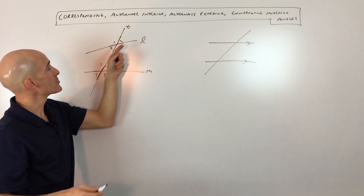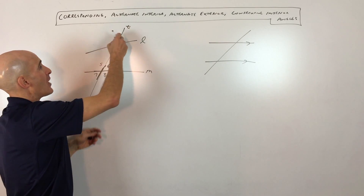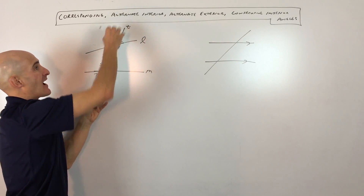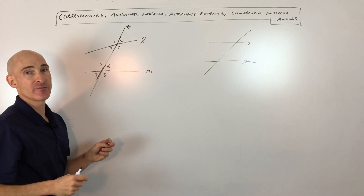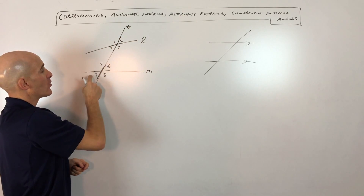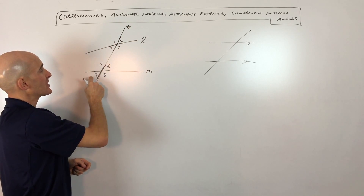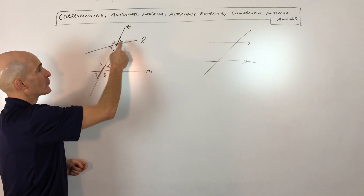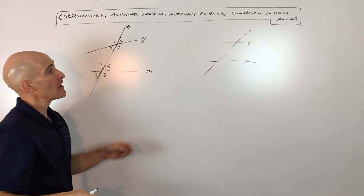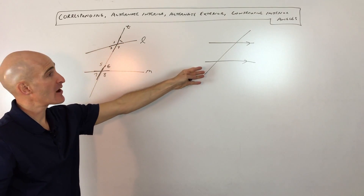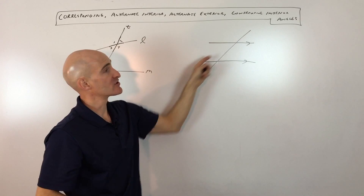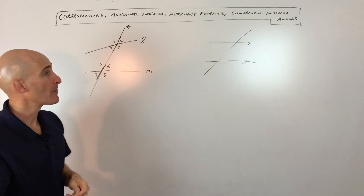Now alternate exterior — they're on the outside. So you can see angles 1, 2, 7, and 8; these angles are on the outside of the two lines. Alternate means one's on the right, one's on the left. So 7 and 2 are alternate exterior, and 1 and 8 are alternate exterior. When the lines are parallel, the alternate exterior angles are going to be congruent or equal.